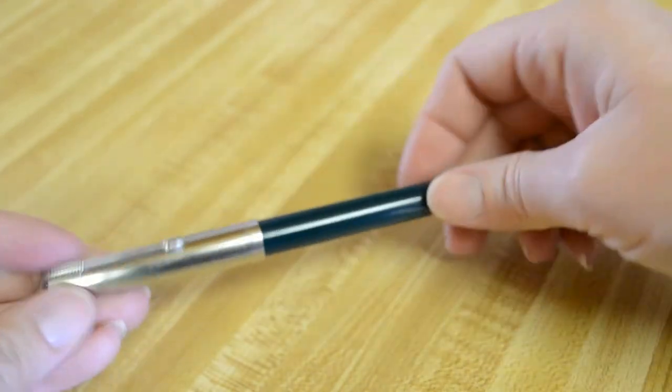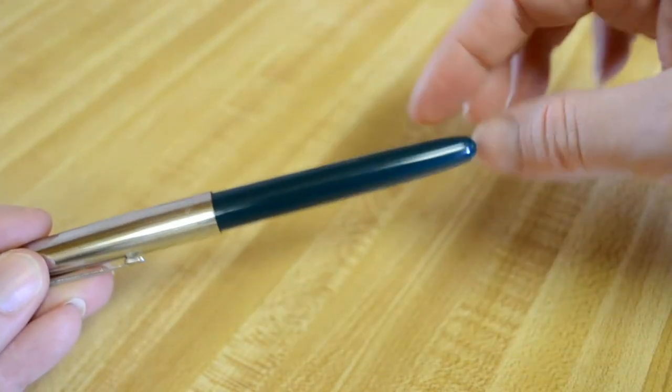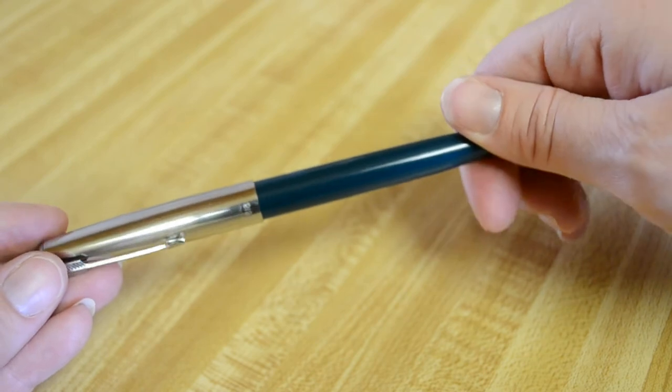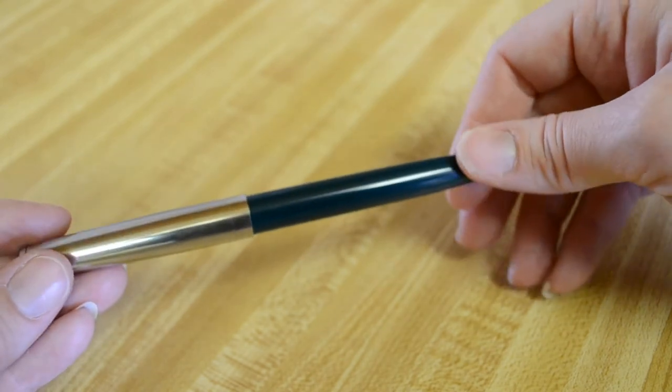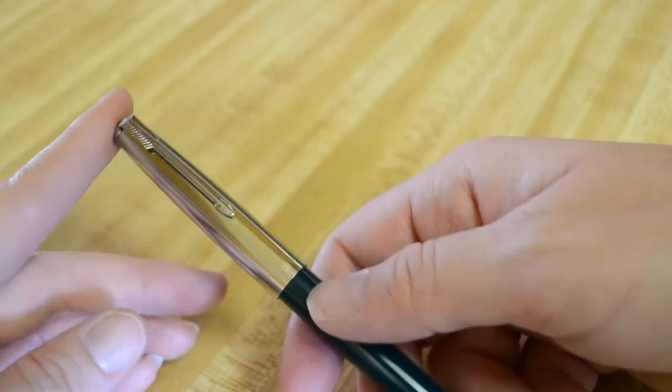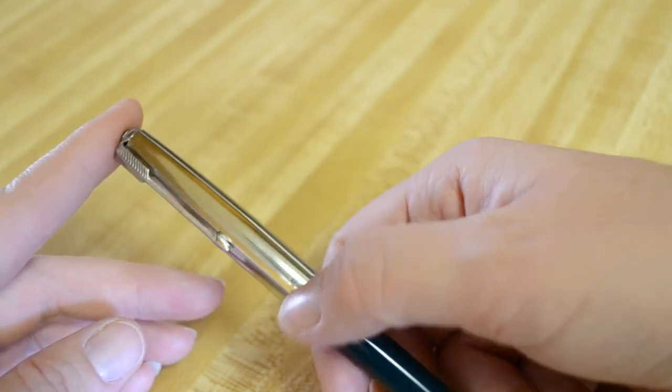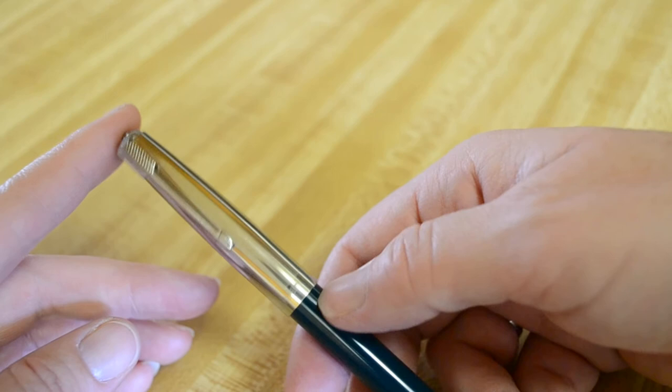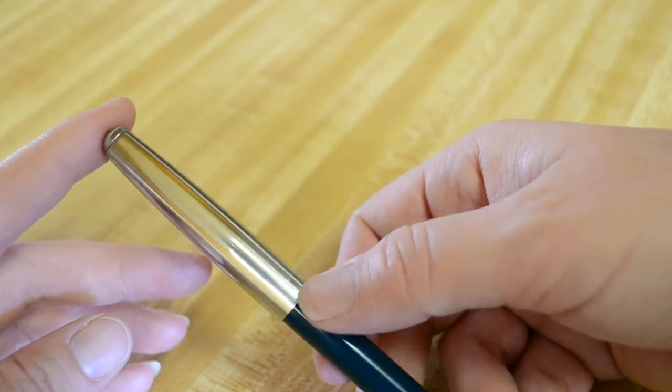So I filled it with Kaweco green ink. I had a bottle of that that was unopened and since the body of the pen is green I thought it'd be fun to make a match up. The only distinguishing mark on this pen is Hero is a Chinese company and there's some Chinese symbols here which I'm going to assume are the brand name Hero and then next to it it says Hero 616.